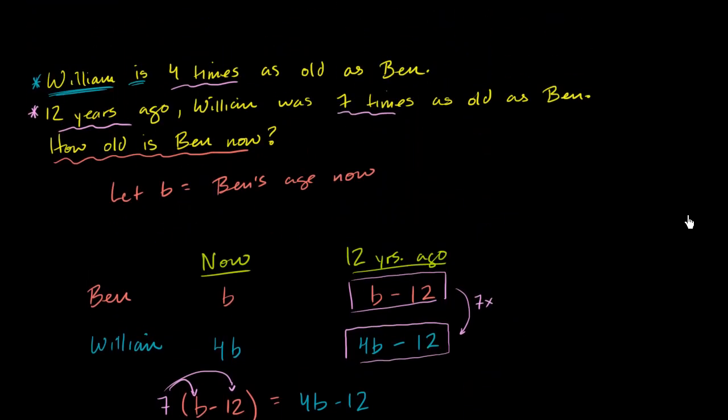So b is equal to twenty-four. Going back to our question. What is Ben's age now? It is twenty-four. And let's verify that this is actually the case. So they're telling us that William is four times as old as Ben. So what is William's current age?